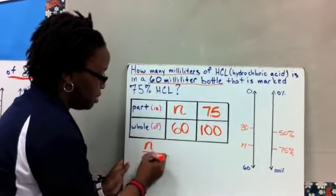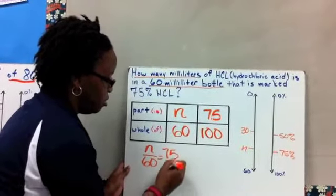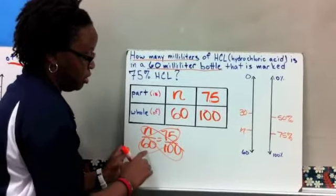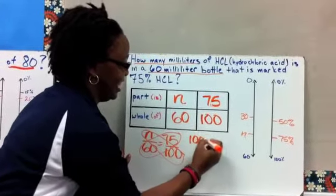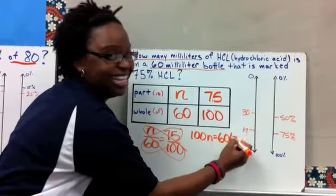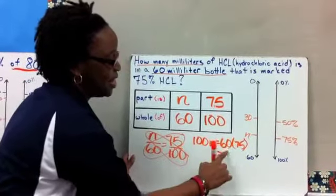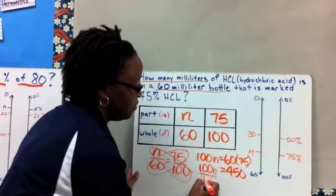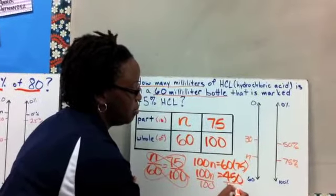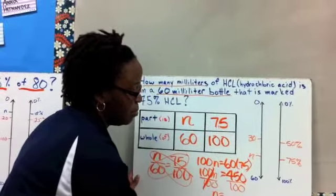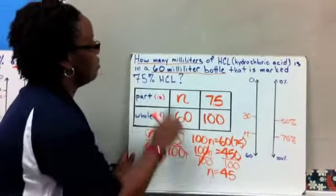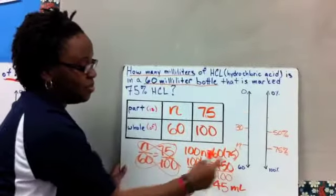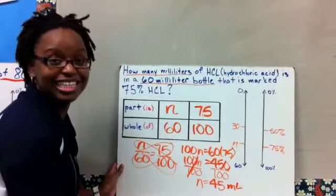So now let's work that problem out and get our answer and make sure that it's reasonable. So our percent proportion is already set up using the table and using the vertical number lines. We know that from here, we're going to cross multiply and divide by 100. So first we've got 60 times 75. We're going to work that part out, 4500. And then 4500 divided by 100. Our n or our missing part is equal to 45. And we're talking about milliliters of HCl here. So I'm going to put 45 milliliters. And we look to see if that's reasonable. Well, I'm pretty sure that 45 is halfway between 30 and 60.